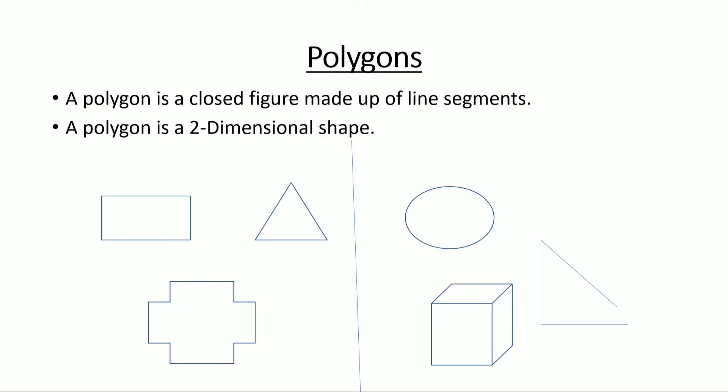What is a polygon? It's a combination of two words. Poly means many, and gons means sides. So a figure which has many sides.